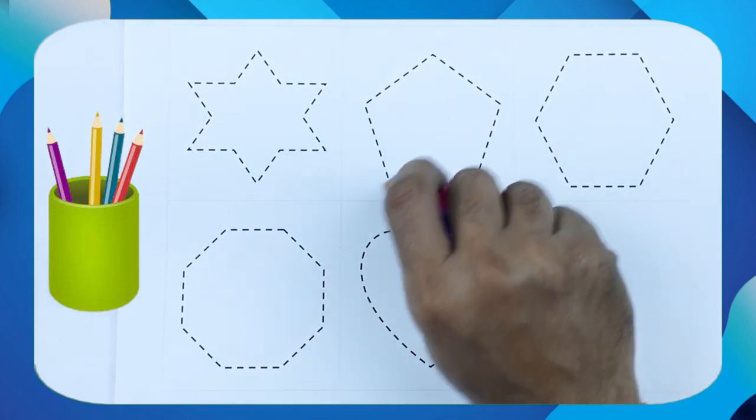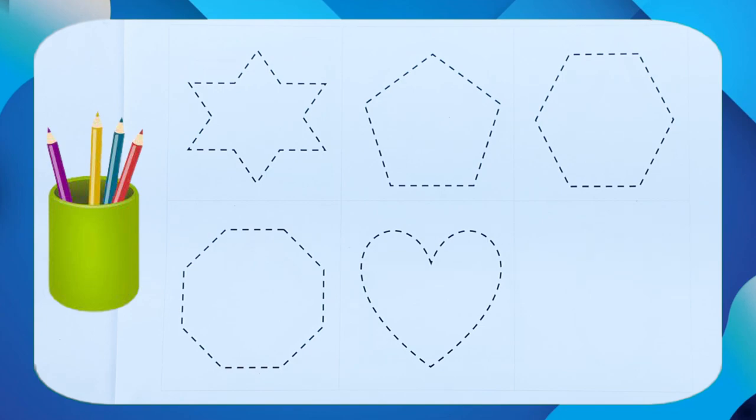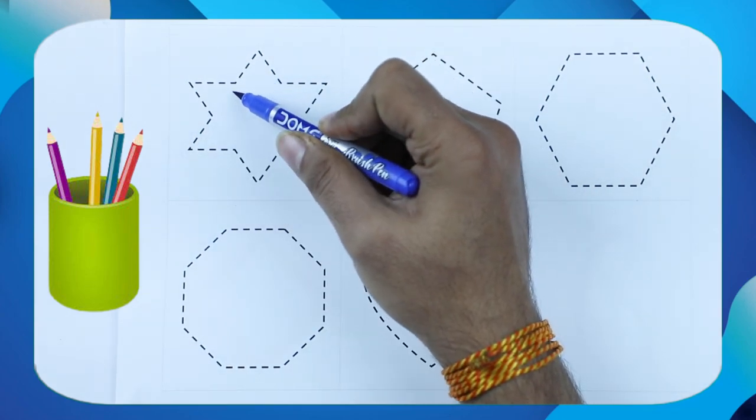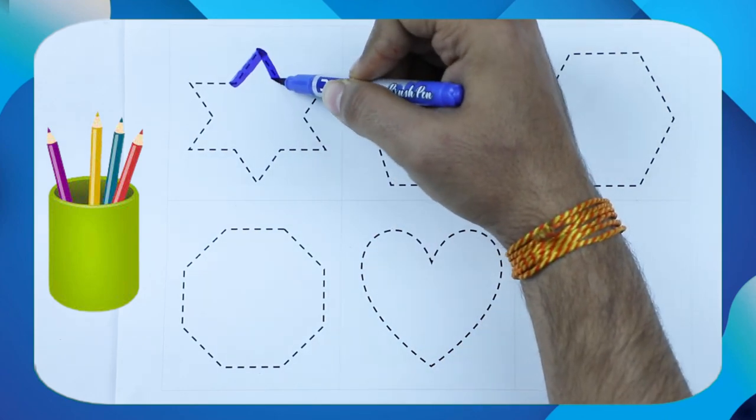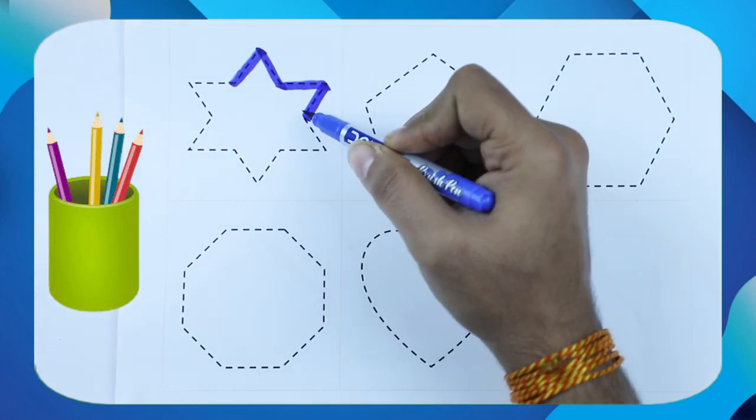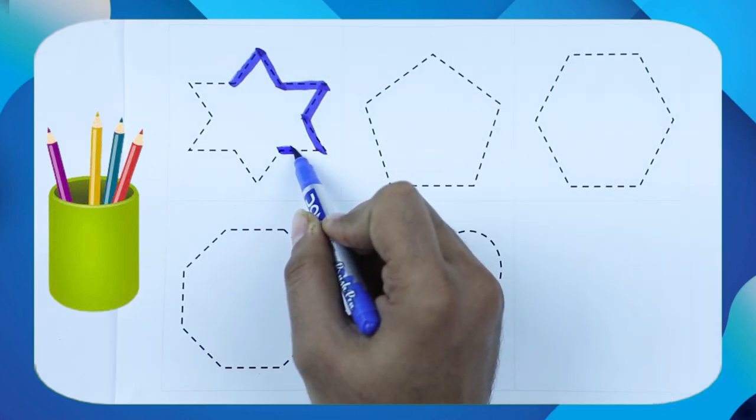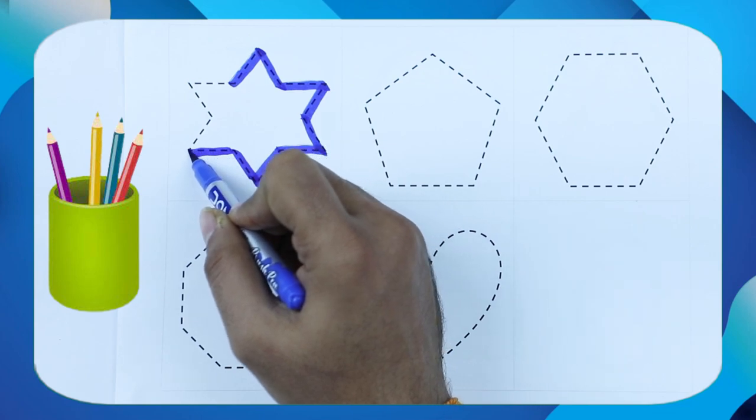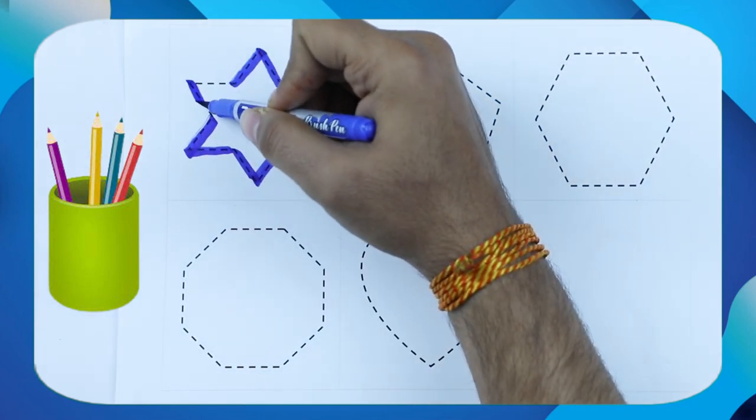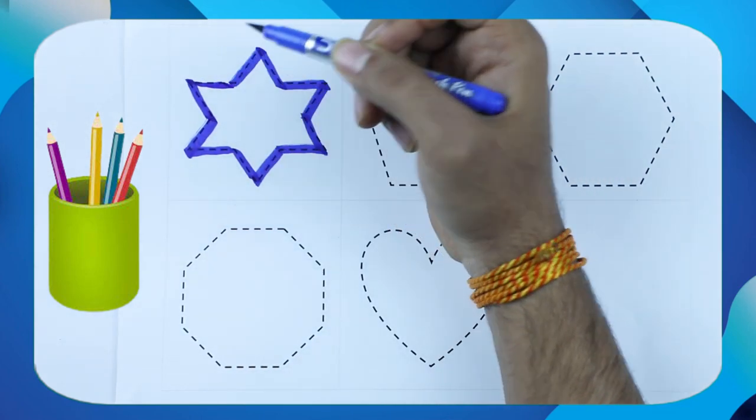Now we make shapes. It's blue color. It's a star. Now we make star with blue color. Yes! It's a star.